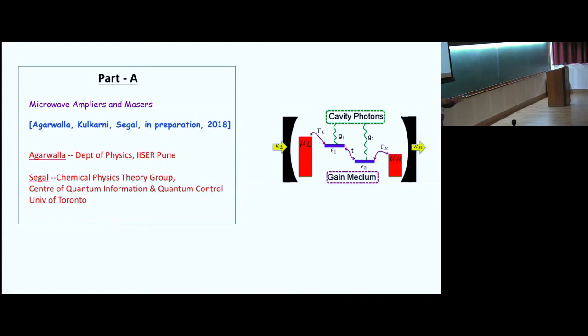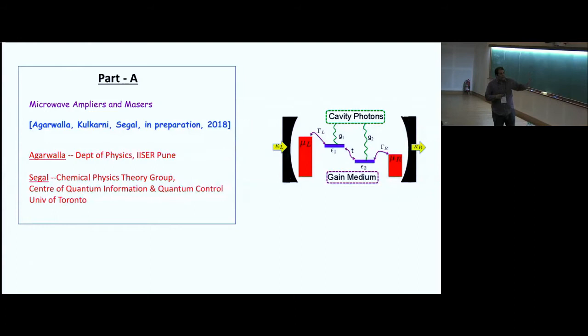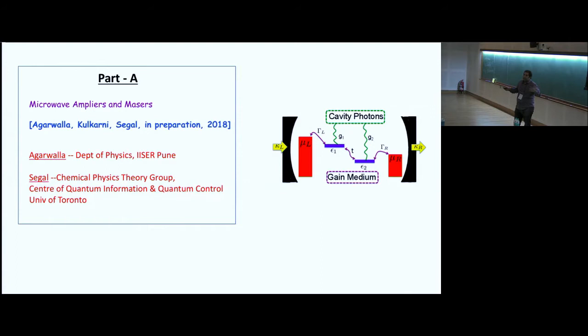Without the quantum dot, if you just have a cavity photon, the distribution will be thermal. But now the question is what kind of distribution the photonic part takes due to this electronic system. You can think of the electronic system as a gain medium or a loss medium. G is the light-matter interaction. You send an input, get an output, take output over input, and ask: does it amplify?